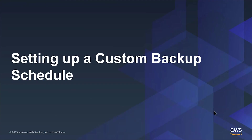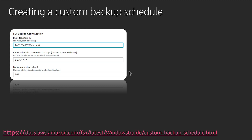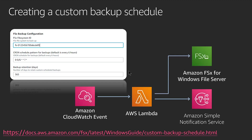In the next demo I'm going to show you how you can set up a custom backup schedule for automated backups on Amazon FSx for Windows File Server. To create a custom backup schedule, there is a solution published in the Amazon FSx documentation. This is a CloudFormation template that you can deploy into your AWS account. What the CloudFormation template deploys is an Amazon CloudWatch event and an AWS Lambda function. The CloudWatch event is triggered based on a cron schedule pattern that you supply.